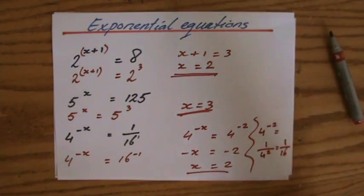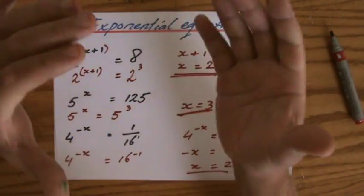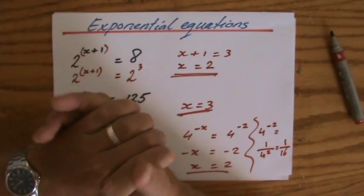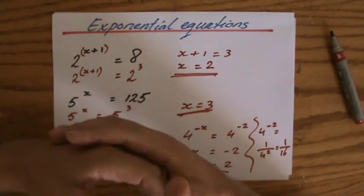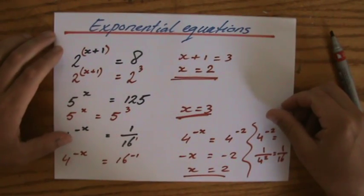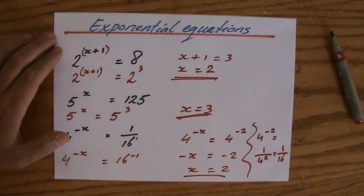Alright. I hope that was useful. Those were the indices. Algebraic indices. We've done the three laws. We've looked at negative indices, fractional indices, and the zero index. We have done so much. I'm proud of you. I'll see you at the next topic. Have a good day.